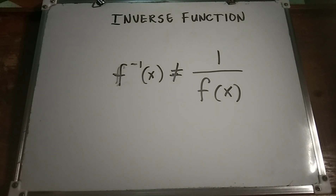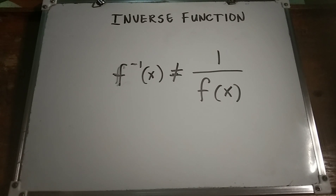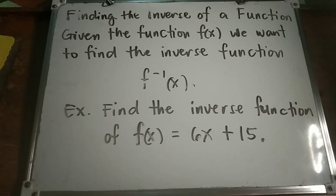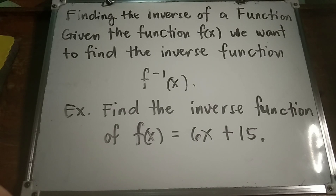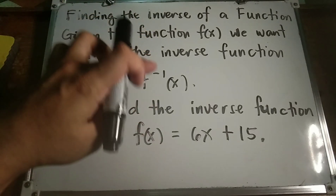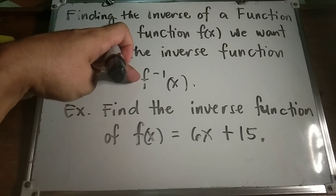The process for finding the inverse of a function is a fairly simple one, although there are a couple of steps that can on occasion be somewhat messy. So here is the process for finding the inverse of a function: given the function f of x, we want to find the inverse function, written as f⁻¹ of x — this is the notation for the inverse function.